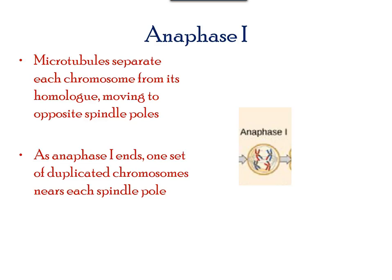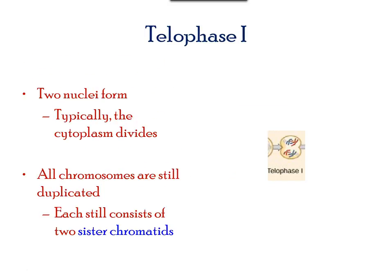In anaphase I, homologous chromosomes separate out and move towards respective poles. However, notice that segments of chromosomes have been exchanged. At the end of anaphase I, the set of all duplicated chromosomes are present near each pole. Telophase I begins and the cytoplasm divides. The result is two cells, but they consist of two sister chromatids each.